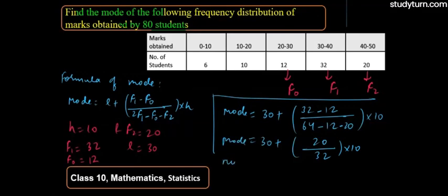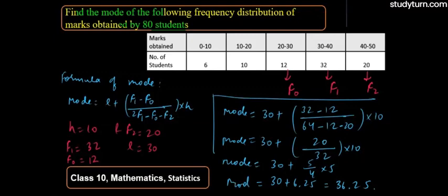So mode here equals 30 and this is 20 divided by 32, so 20 upon 32 simplifies to 5 upon 8, multiplied by 10, which gives result 6.25. So further simplify: 30 plus 6.25 equals 36.25.